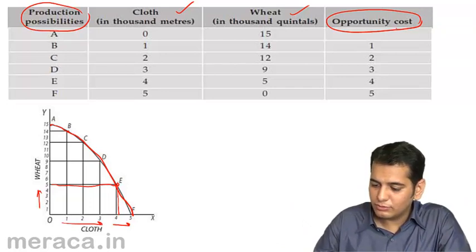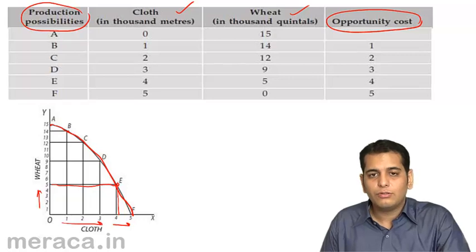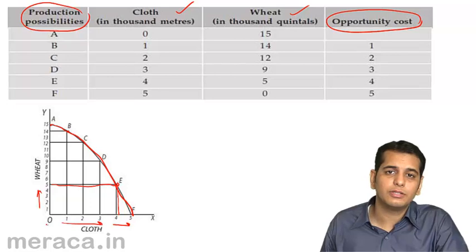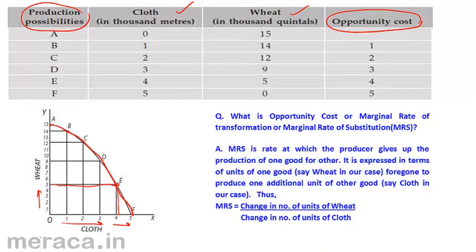Now, if we look at the opportunity cost column — what is opportunity cost? Opportunity cost is also called the marginal rate of transformation or marginal rate of substitution. We have learned that the production possibilities curve is also called a transformation curve. So this opportunity cost is also called the marginal rate of transformation or marginal rate of substitution, wherein you are substituting one good with another good. The production of one good is sacrificed for producing another good.